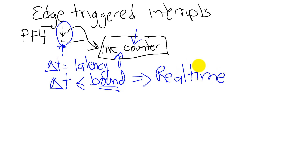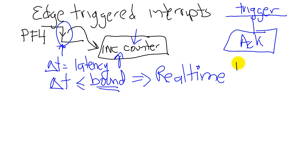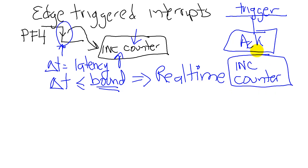In order to make this real-time, we're going to use the interrupts. The interrupt is going to cause a trigger on the falling edge of PF4. We'll acknowledge the interrupt, which is to clear the trigger, and then we will increment the variable. After incrementing the variable, we'll return back to where we came from.